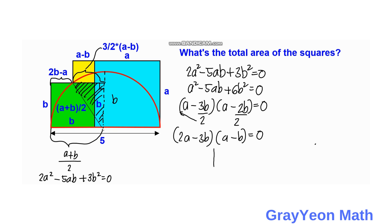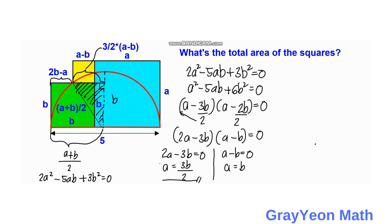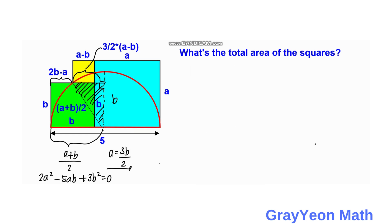So we have (2a minus 3b) = 0 giving a = 3b/2, and (a minus b) = 0 giving a = b. We take only the first solution, a = 3b/2, because if a equals b we would only have two squares and the figure would not correspond to the problem. There would be no third square.